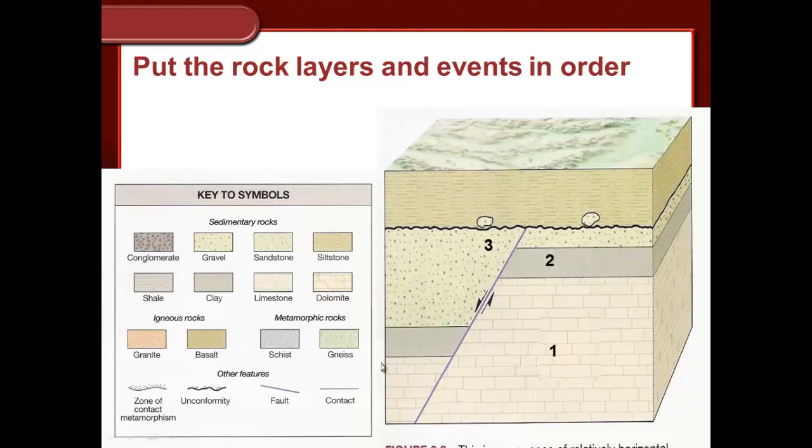And again we want to rely on cross-cutting relationships. Whatever cuts across the other is the youngest. We know that this erosional feature, this unconformity, is cutting across the fault, which means this should be younger than this. So the older of the two is this fault. Then you've got this disconformity because it's just an erosional feature in between two sedimentary rocks, and finally number six.